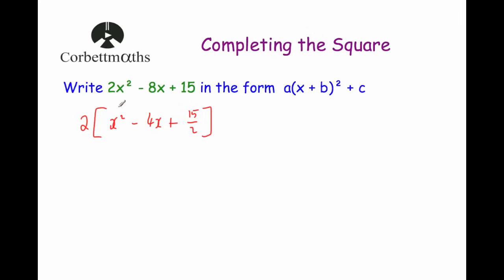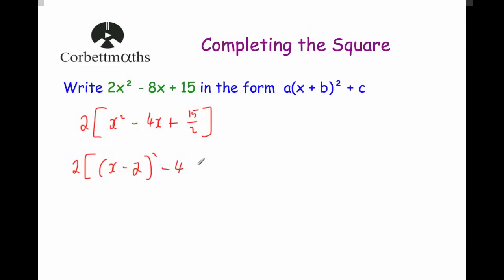Now we're going to forget about the 2 and do completing the square on the expression inside the square brackets. Remember, if you need a recap go back and watch the completing the square video. We open brackets, write x, and then subtract half of the x coefficient — half of minus 4 is minus 2 — close bracket squared, then subtract that value squared. Minus 2 squared is 4, so we subtract 4, then add the 15 over 2.